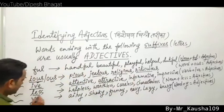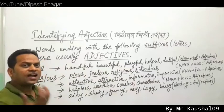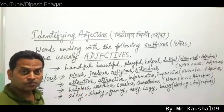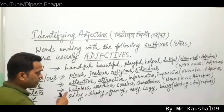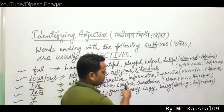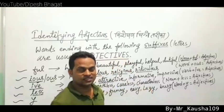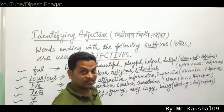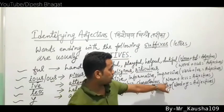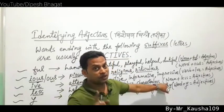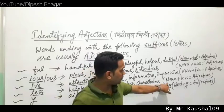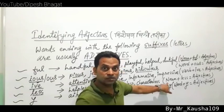Next suffix: noun plus -less equals adjective, meaning 'lack of something' or 'not having the quality of something.' Examples: helpless, worthless, careless, characterless, mannerless, penniless. All these are adjectives formed by noun plus -less.